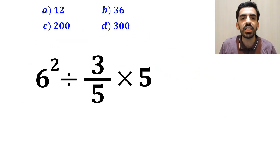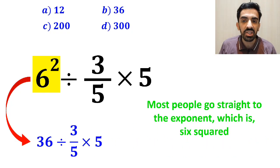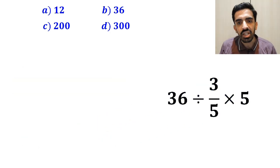In the first step to solve this question, most people go straight to the exponent, which is 6 squared, and rewrite this expression as 36 divided by 3 over 5 multiplied by 5.